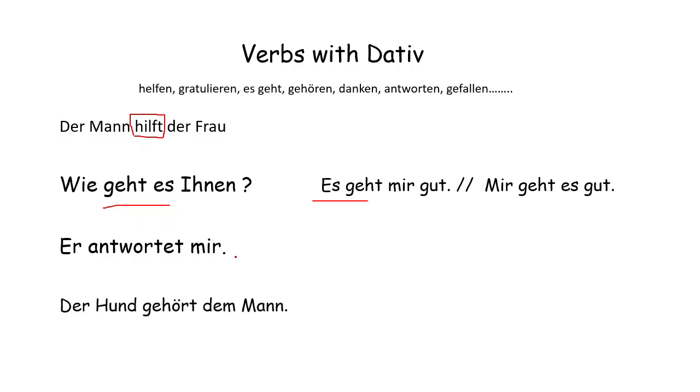'Der Hund gehört dem Mann' — 'gehören' is a dative verb, so 'der' changes to 'dem'.